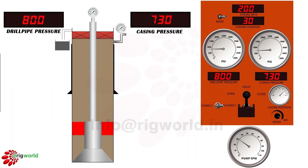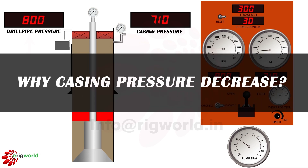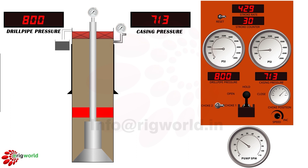Casing pressure increases due to influx expansion. At 200 strokes pumped, keeping drill pipe pressure constant (single fluid column) equal to ICP at 800 psi, casing pressure increases again due to influx expansion. At 300 strokes pumped, ICP and drill pipe are held constant at 800 psi. Why does casing pressure then decrease? As the influx passes the BHA, the height of the influx decreases, causing an increase in hydrostatic pressure in the annulus, which causes the back pressure on the casing gauge to decrease.